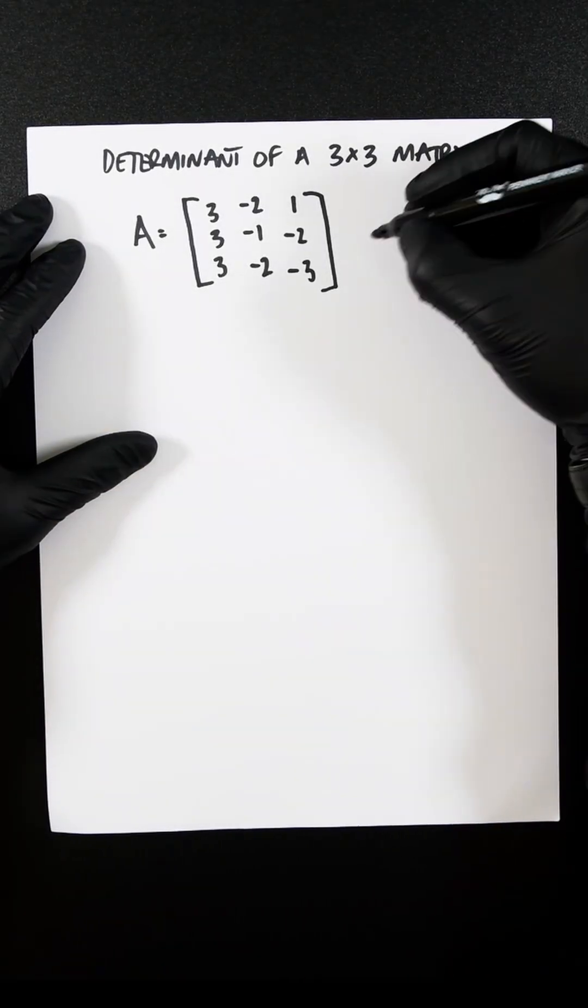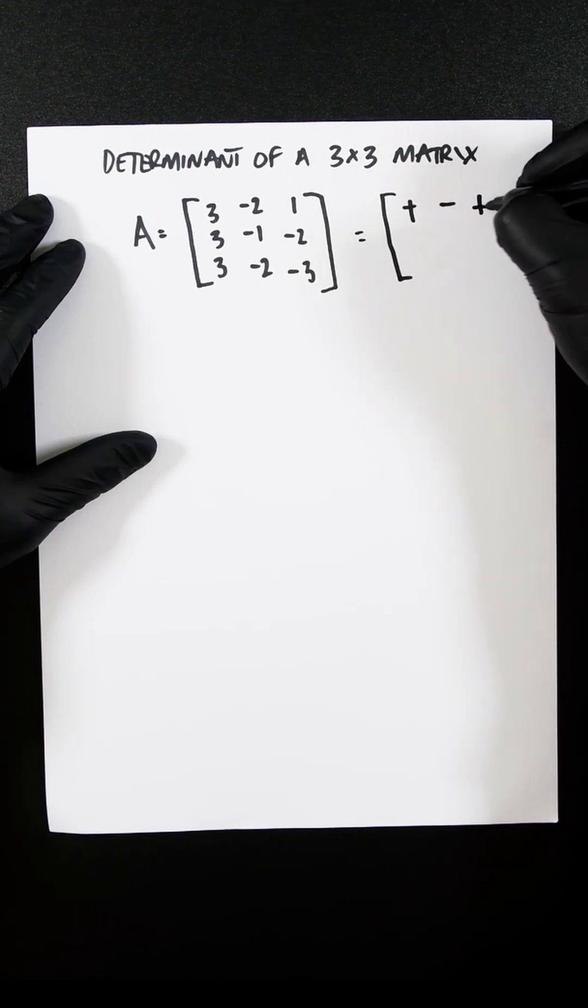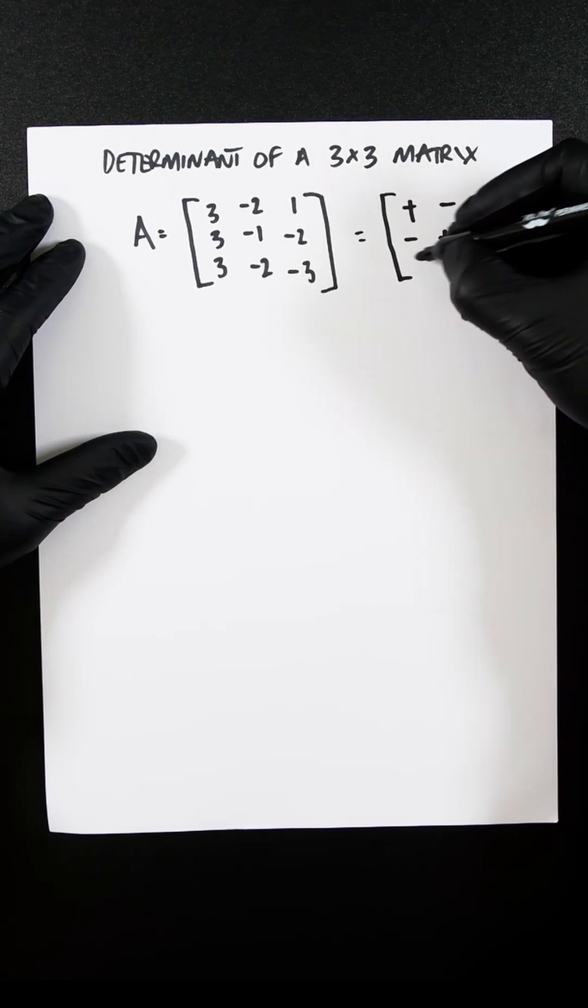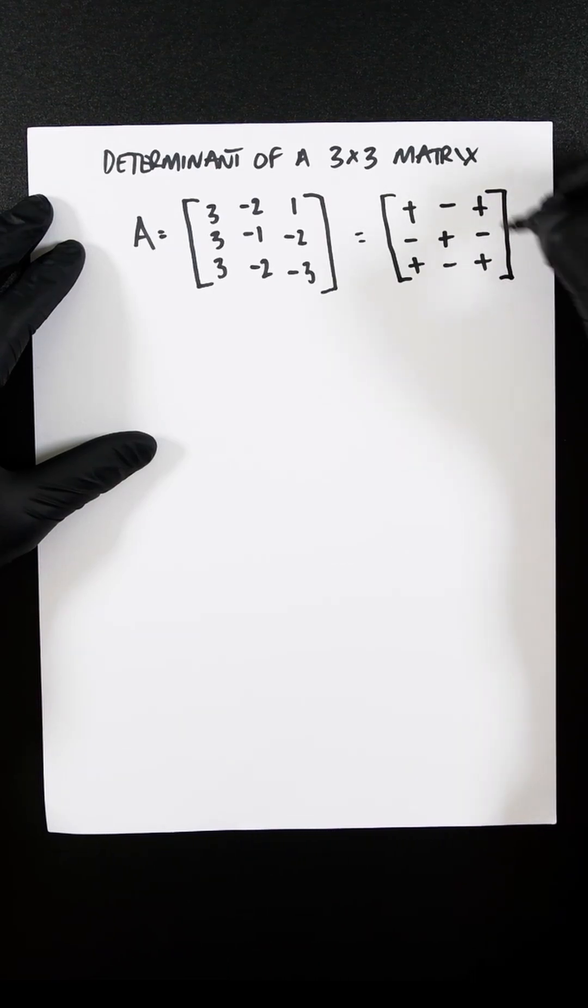First things first, we know that a matrix maps like this: plus, minus, plus, and then whatever is the opposite is next to it. So there is no plus or minus next to each other.